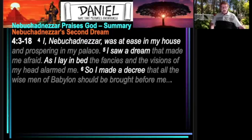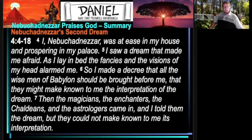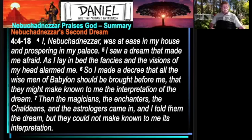So we have in verses 1 through 3 Nebuchadnezzar praising God with a summary, and then we get to his second dream. We pick it up in verse 4: 'I, Nebuchadnezzar, was at ease in my house and prospering in my palace. I saw a dream that made me afraid. As I lay in bed, the fancies and the visions of my head alarmed me. So I made a decree that all the wise men of Babylon should be brought before me, that they might make known to me the interpretation of the dream. Then the magicians and the enchanters and the Chaldeans and the astrologers came in and I told them the dream — unlike the last time. But they could not make known to me the interpretation.'